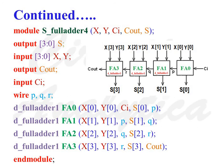Next line d_fulladder1 FA2 open bracket X[2], Y[2], q, s[2], r close bracket semicolon. This defines instantiation of a 1-bit full adder labeled as FA2.